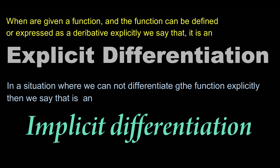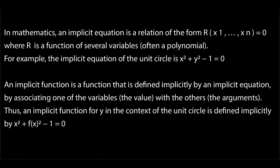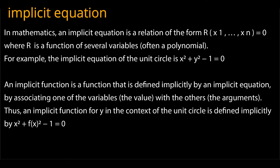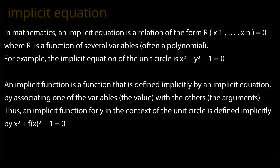Let's look at the definition. In mathematics, an implicit equation is a relation of the form R(x₁, ..., xₙ) = 0, where R is a function of several variables. For example, the implicit equation of a unit circle is given as x² + y² − 1 = 0. So an implicit function is a function defined implicitly by an implicit equation by associating one variable with the other.